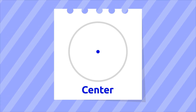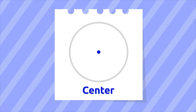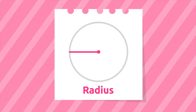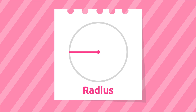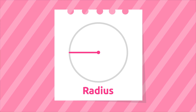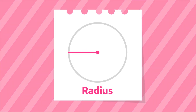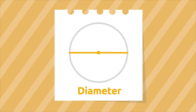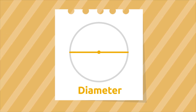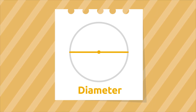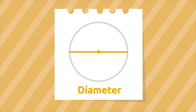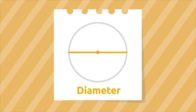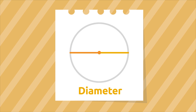The radius is a segment which connects the center with any point of the circumference. The diameter is a segment which connects two points of the circumference passing through the center. It divides the circle into two parts. As you can see, the diameter is twice the radius.